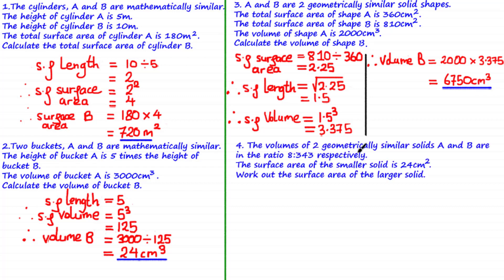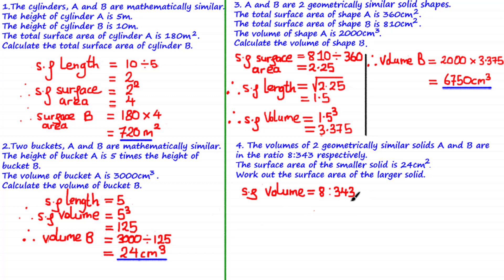The volumes of two geometrically similar solids A and B are in the ratio 8 to 343 respectively. The surface area of the smaller solid is 24 centimeters squared. Work out the surface area of the larger solid. This time the volumes are expressed as a ratio, and we can express the scale factor of volume as 8 to 343, then work with this ratio to find the scale factors of length and surface area.